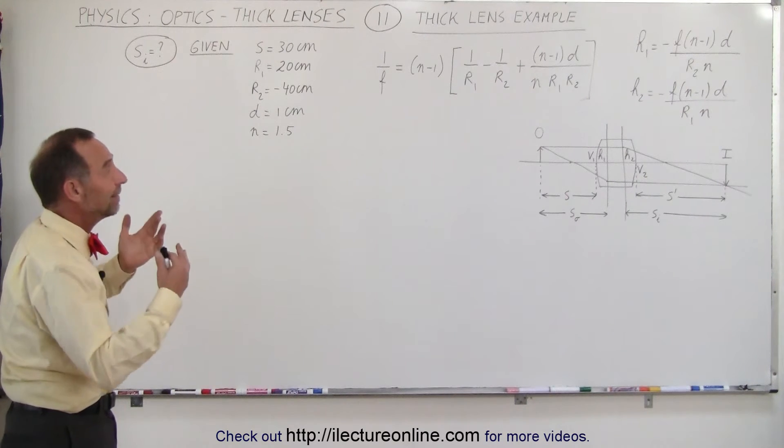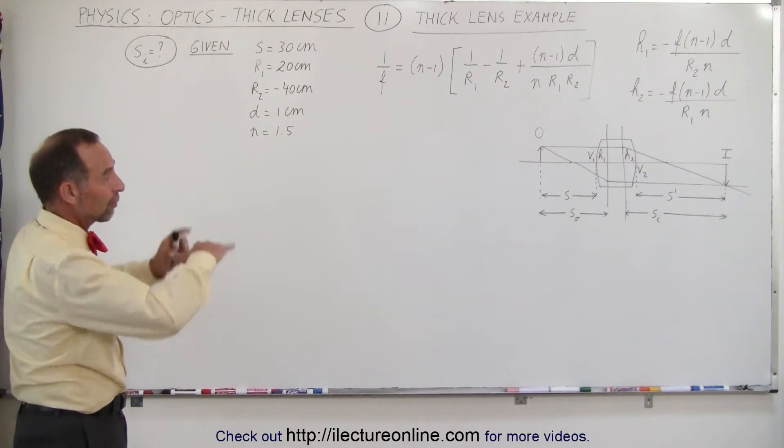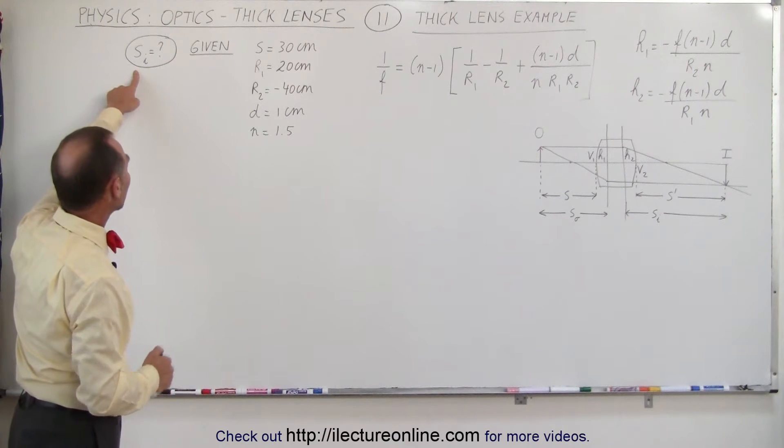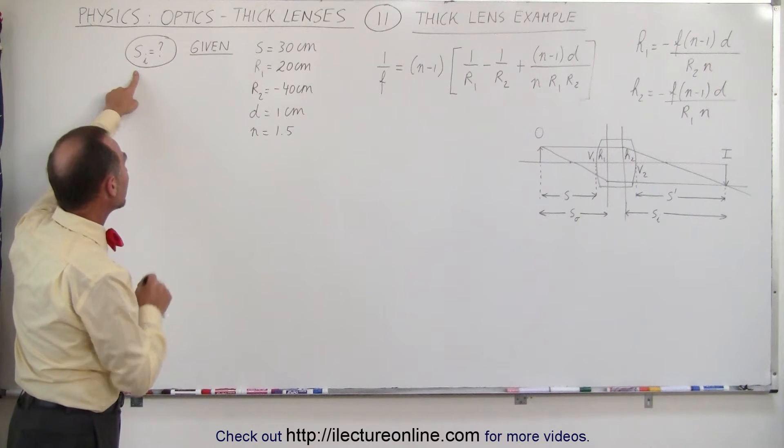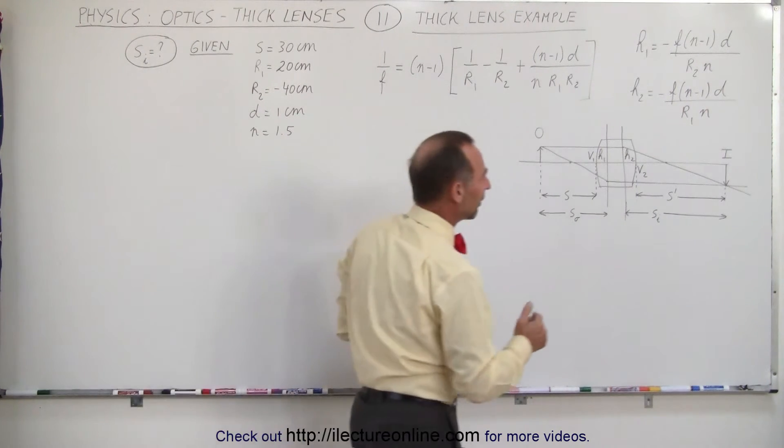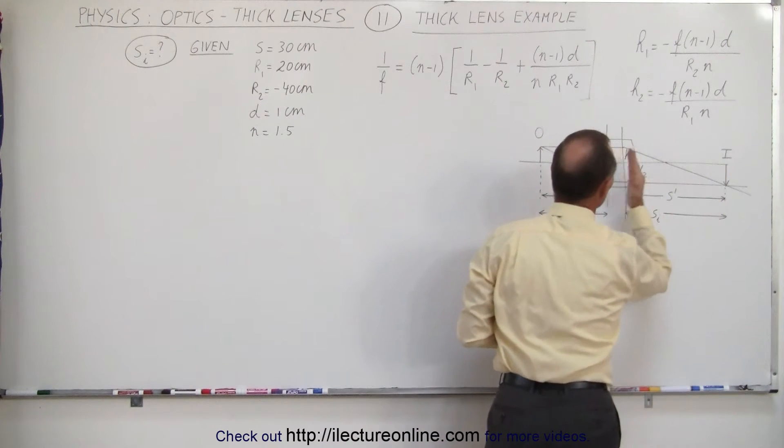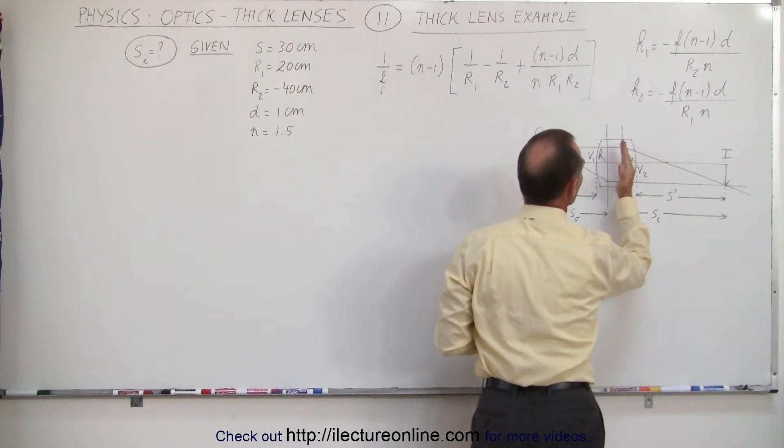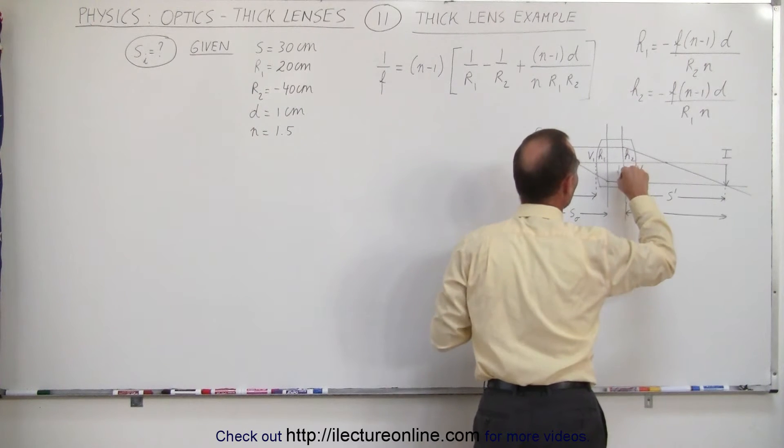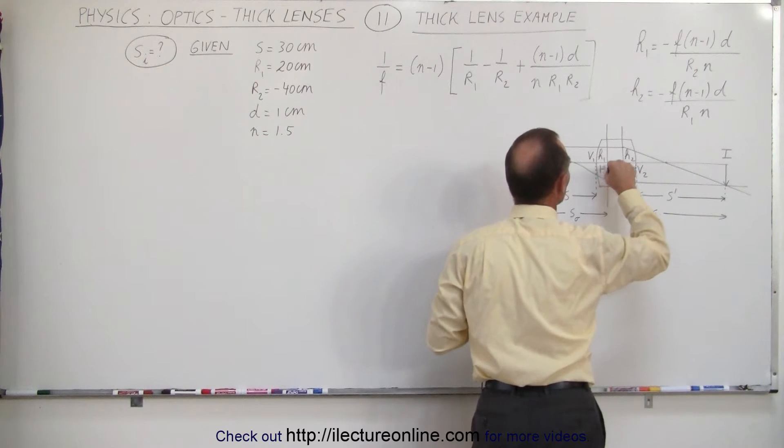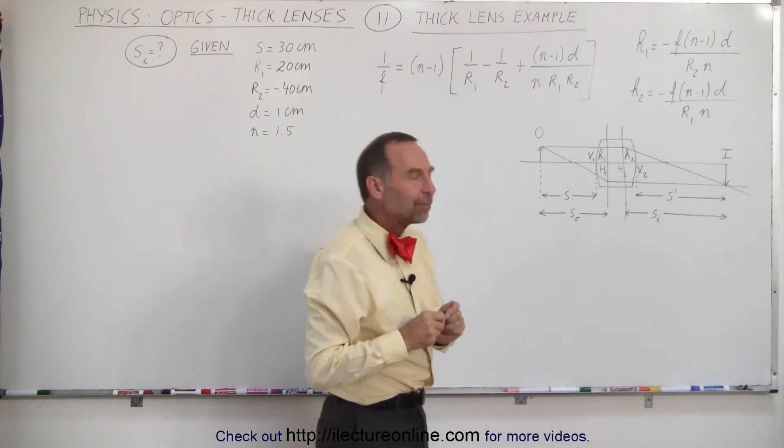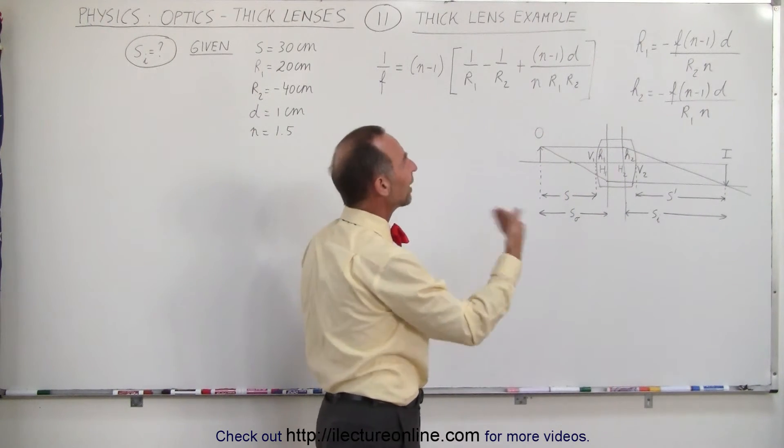Assuming the lens is in air, the index of refraction of the air of course is 1. We're asked to find the distance to the image, the image distance, but this is for a thick lens. So what they're asking for, they're asking for the distance from the image to the back principal plane, to the back principal point. So let's write this as h2, this is h1, so it's this distance right here. And that makes it a little bit more complicated, because how do we find that distance?